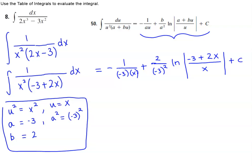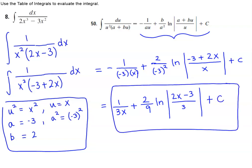And now let's go ahead and simplify a little further. So we have a negative times a negative, which is going to give us a positive. So we have 1 over 3x plus 2 over negative 3 squared is 9, so that's 2 ninths, times the natural log of the absolute value of 2x minus 3 over 3, plus c. And therefore there is our result.